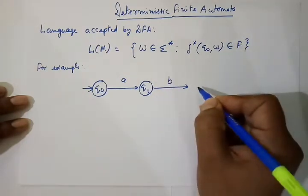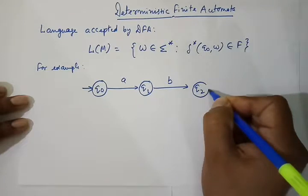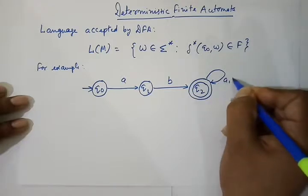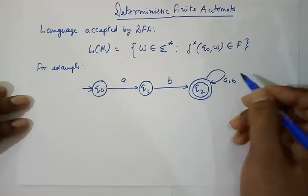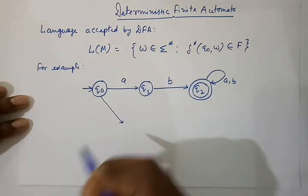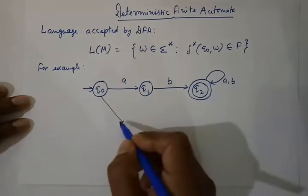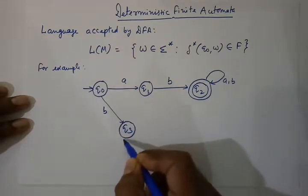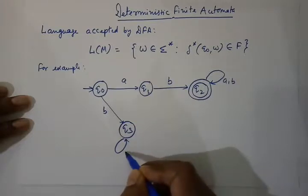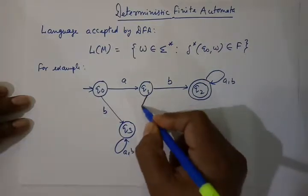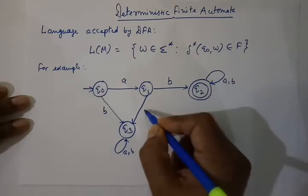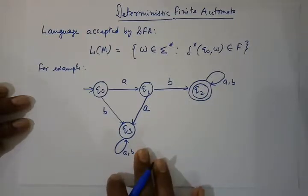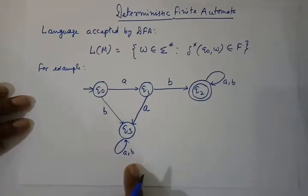For example, we are constructing a DFA. Q1 is B here, Q2 is our final state so we are putting a double circle here. This is a self-loop. B, this is our state Q3, with transitions A, B and A. We take this example DFA and see the strings which are going to be accepted.